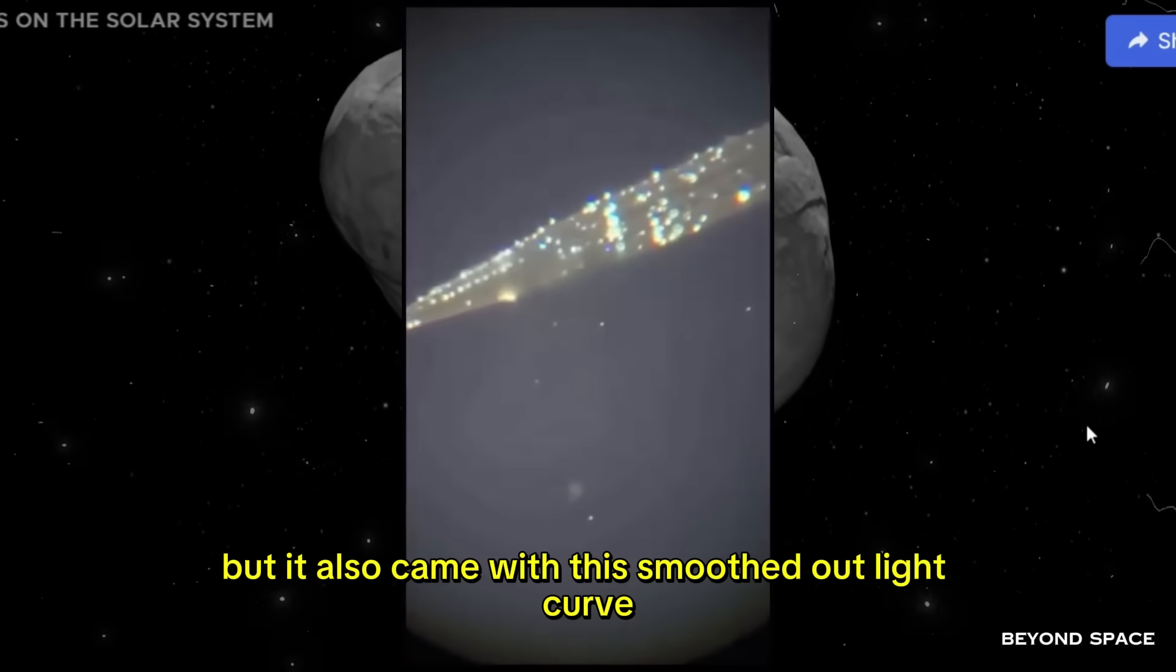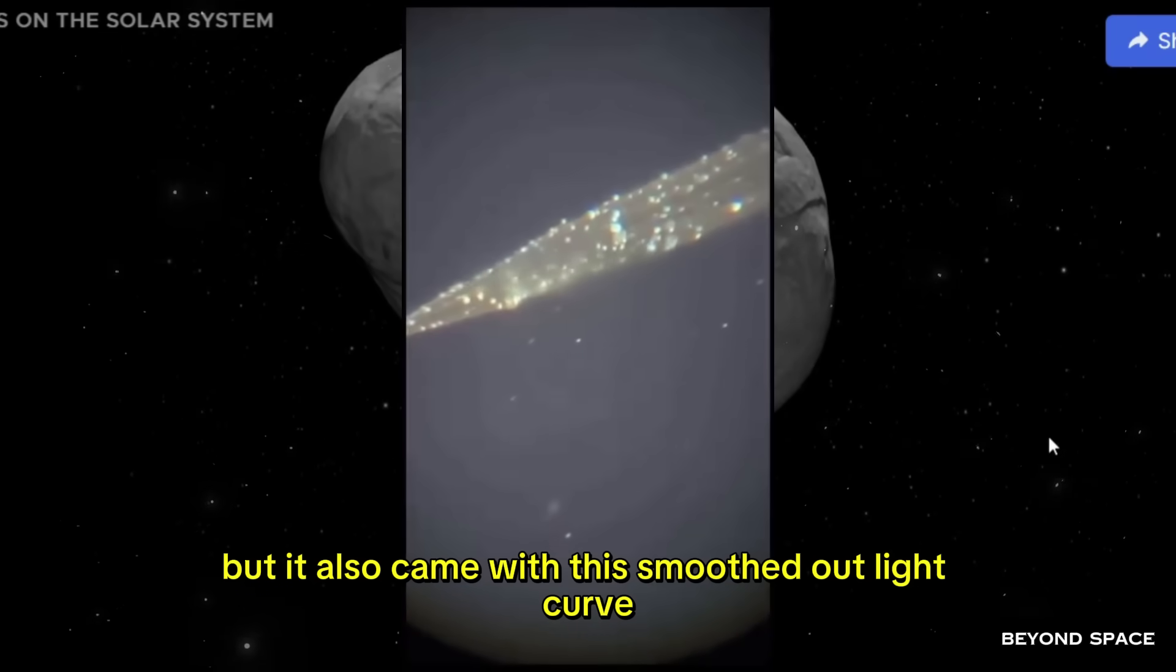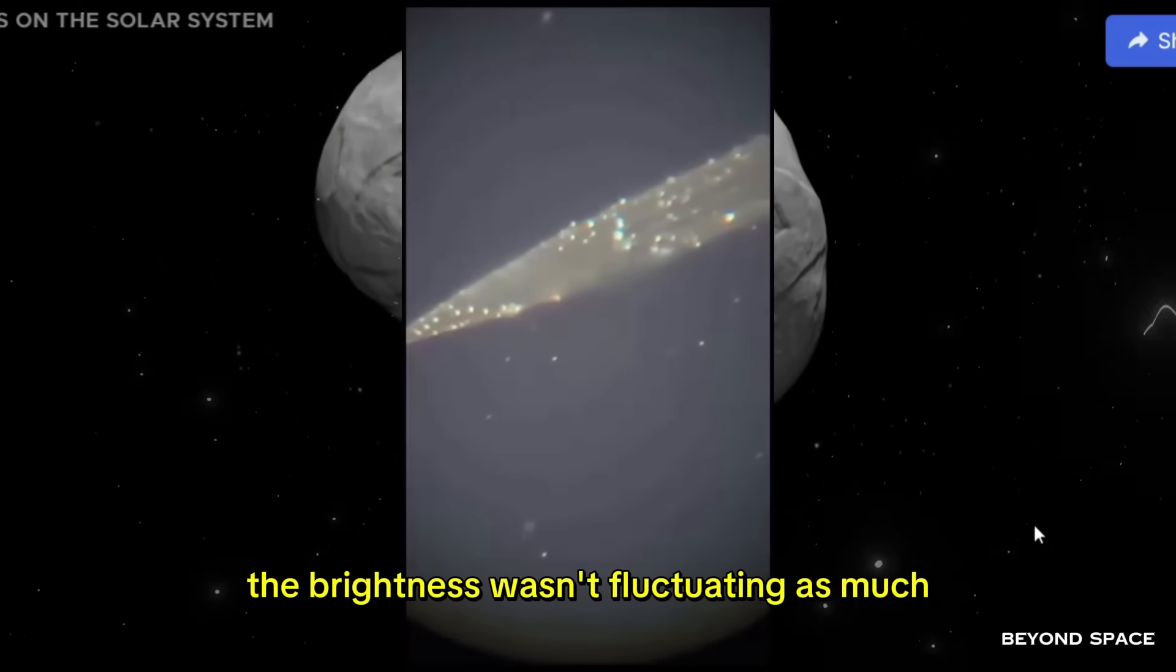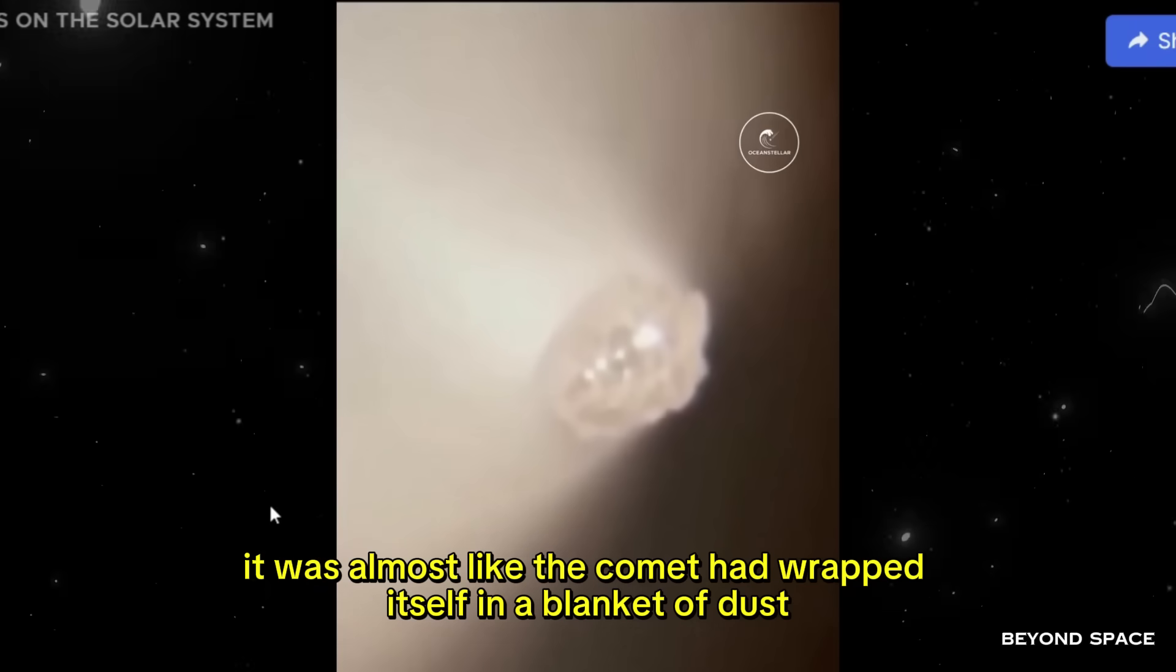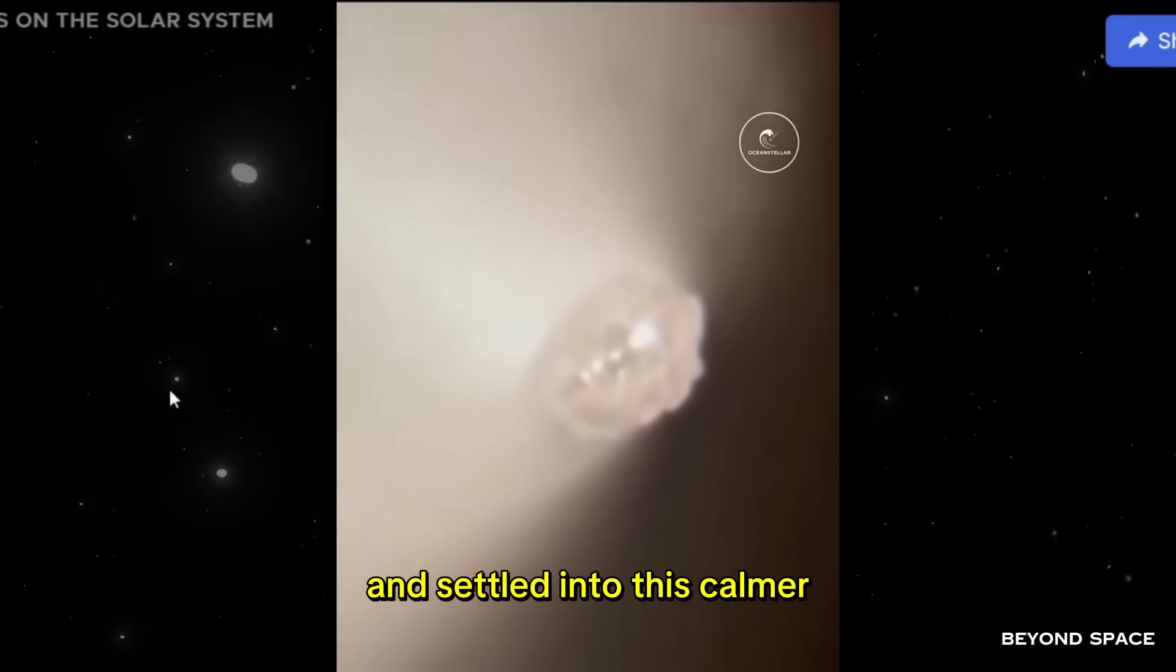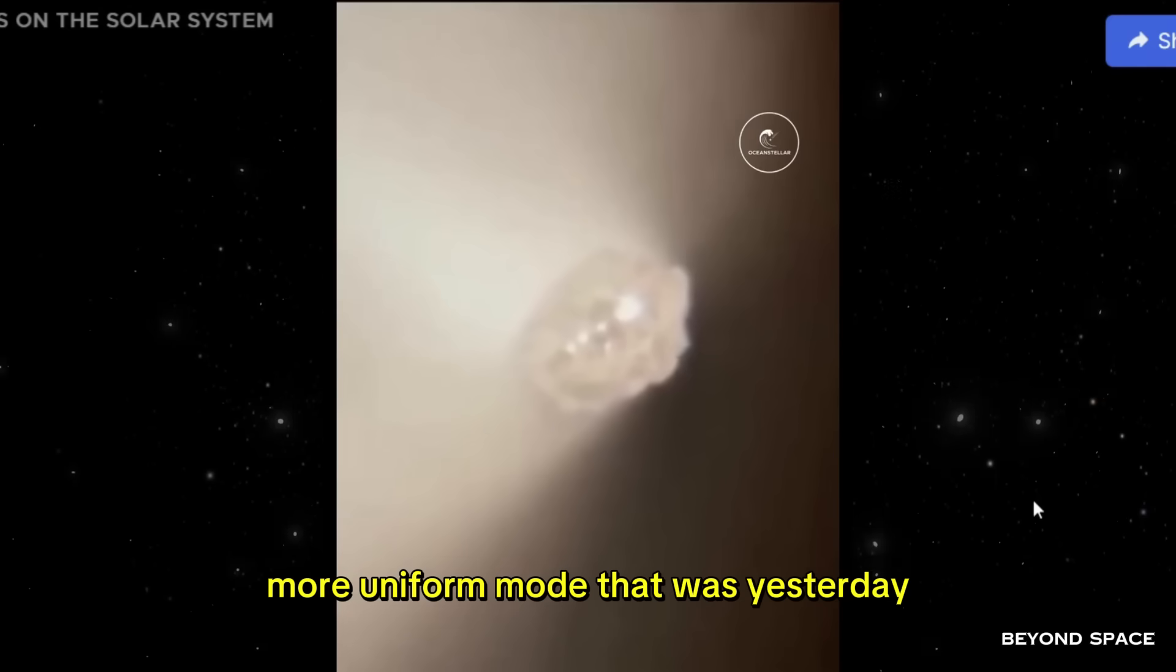And that was strange enough on its own, but it also came with this smoothed-out light curve. The brightness wasn't fluctuating as much. It was almost like the comet had wrapped itself in a blanket of dust and settled into this calmer, more uniform mode. That was yesterday.